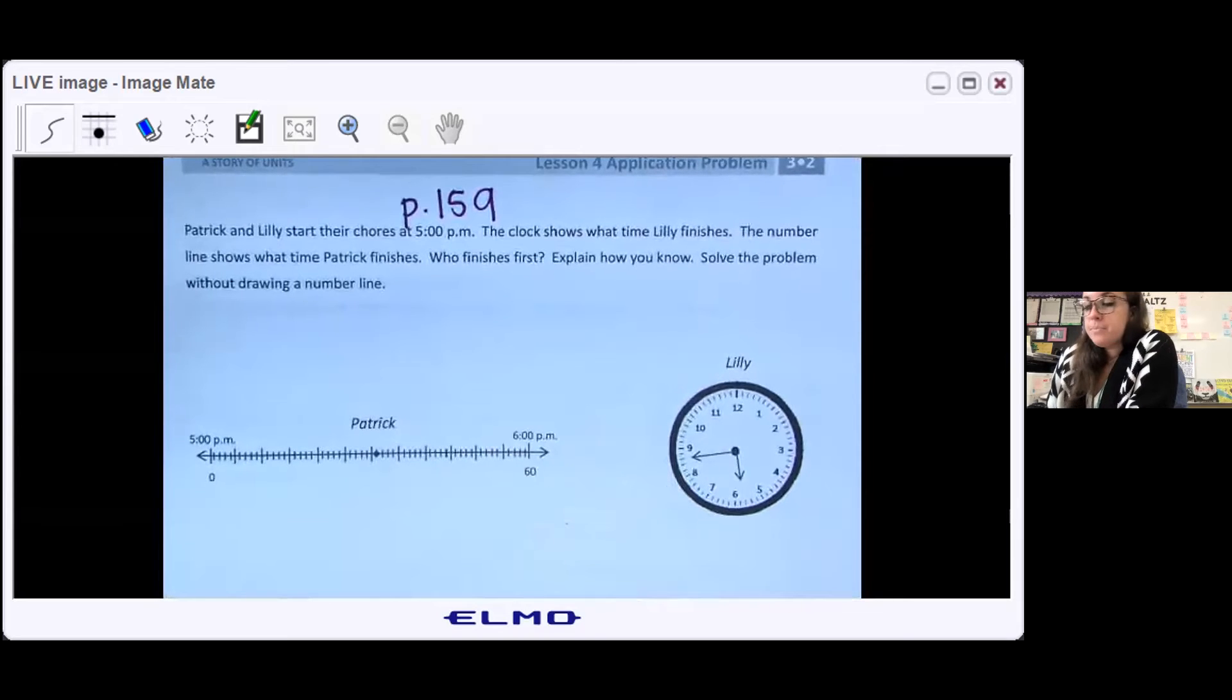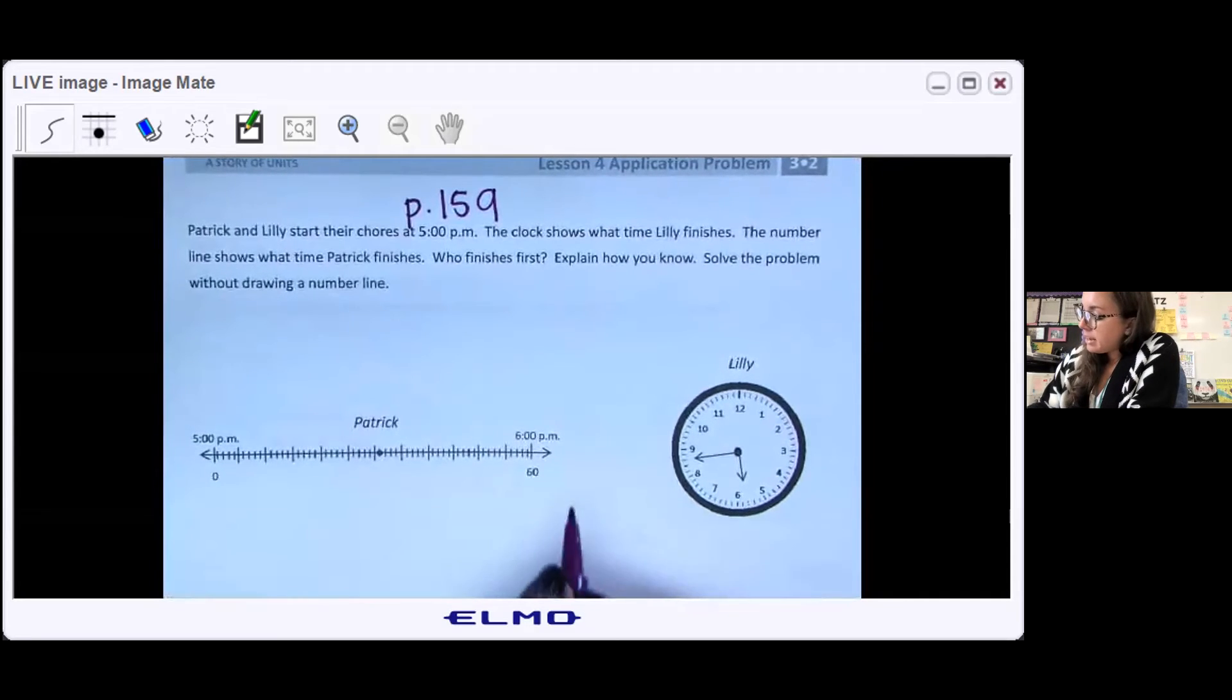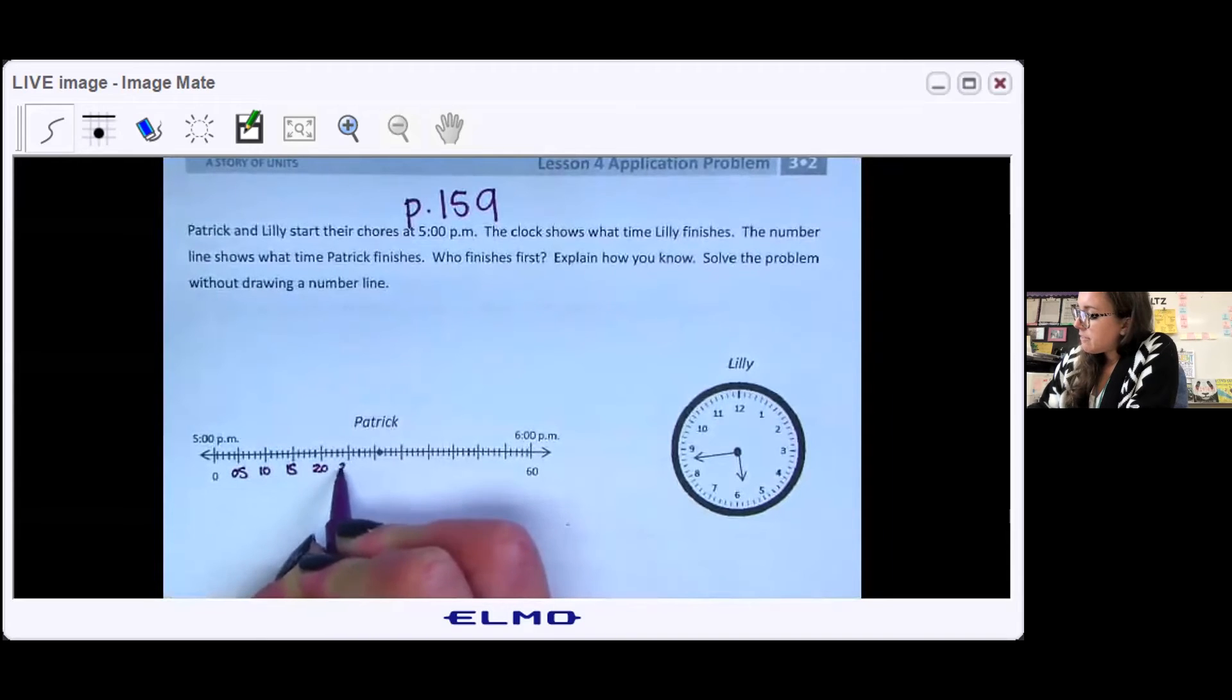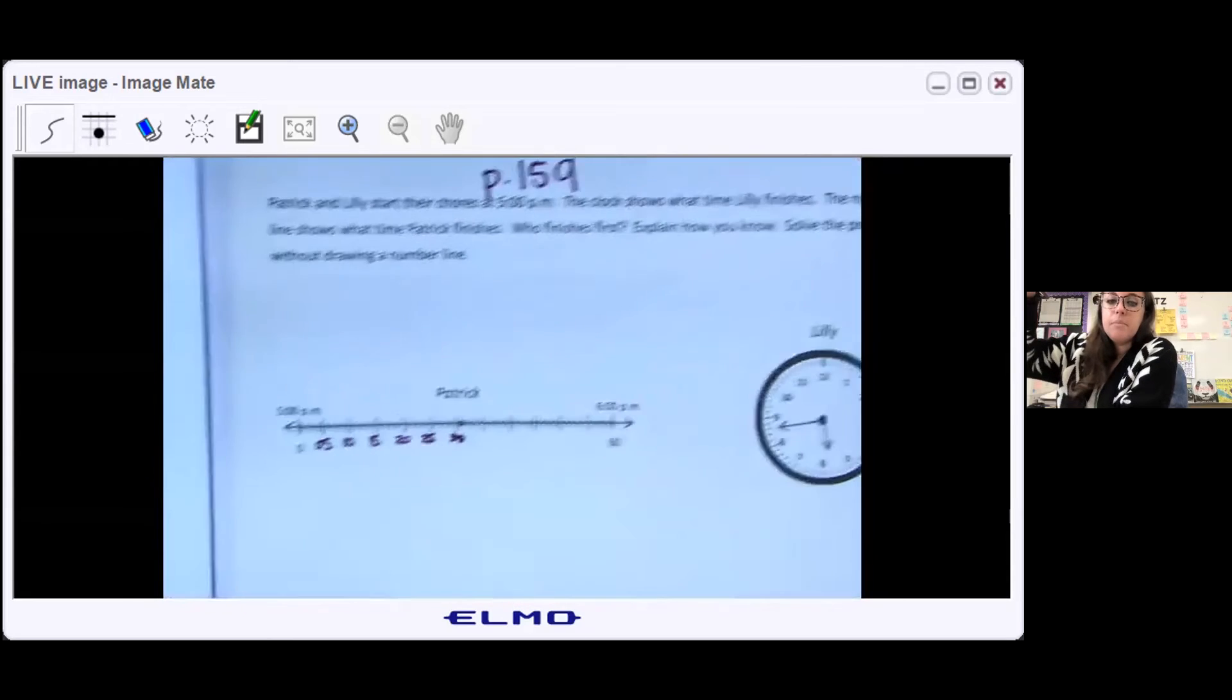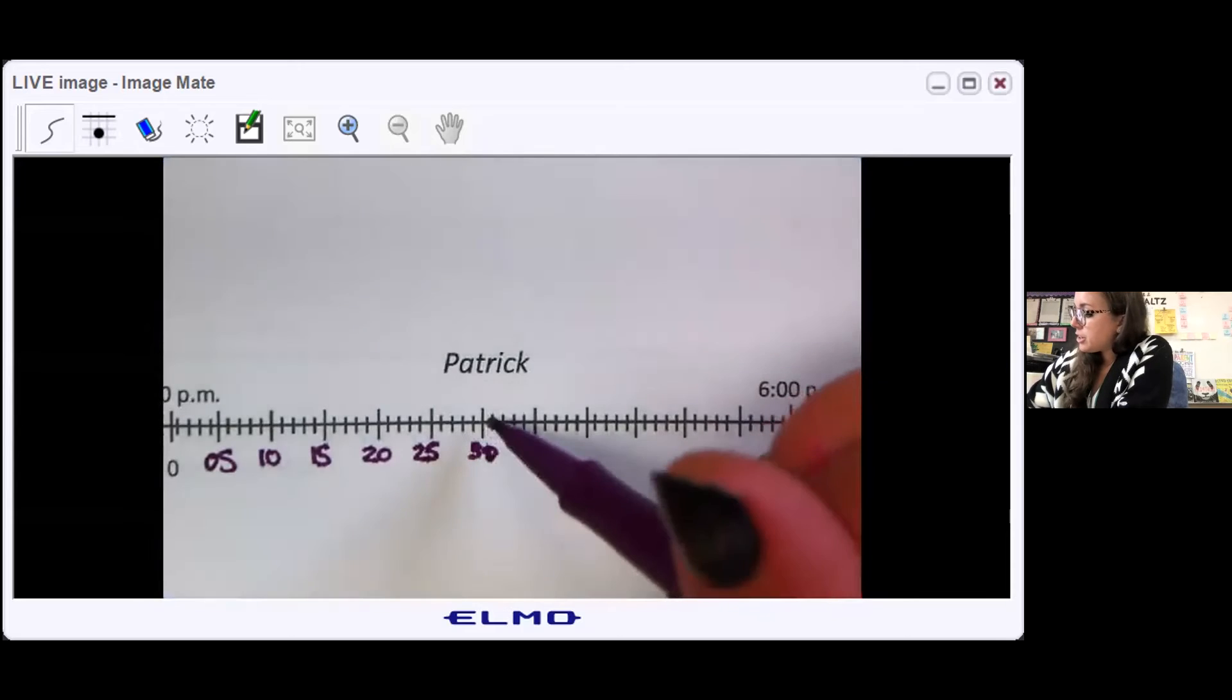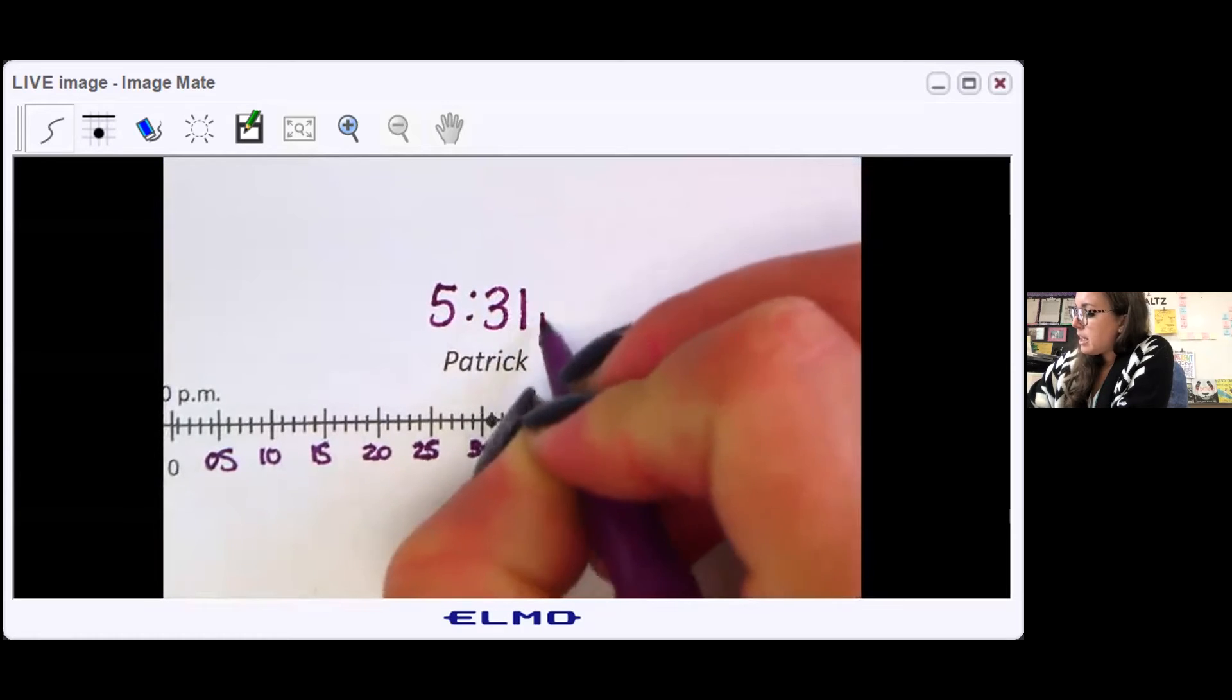Okay, now that you've tried it, I'm gonna go over how I would attack this problem. Now remember, if you solve it differently than me, it's fine as long as we get the same answer. So first I wanna decide what time Patrick finished his chores. So I'm on my number line. If this is five o'clock, I know this is 5:05, 5:10, 5:15, 5:20, 5:25, 5:30. And this dot here, it's one tick mark after the 30. So it must be 31. So Patrick finished his chores at 5:31 p.m.